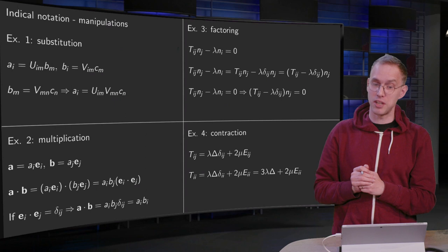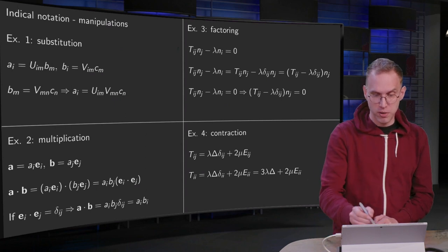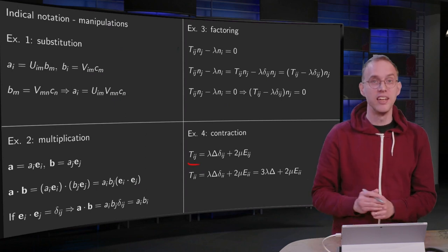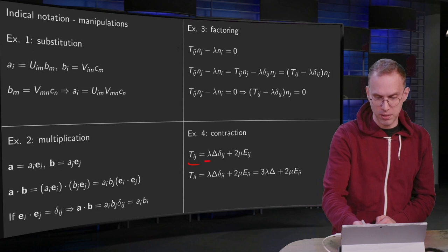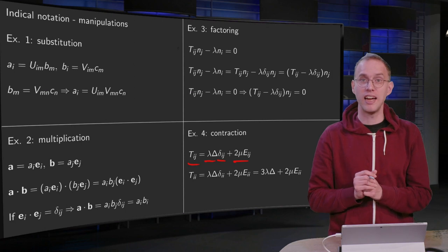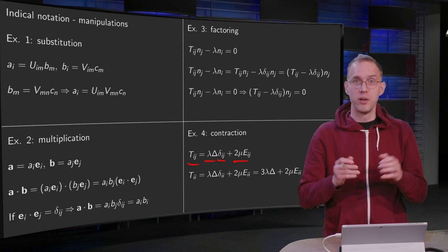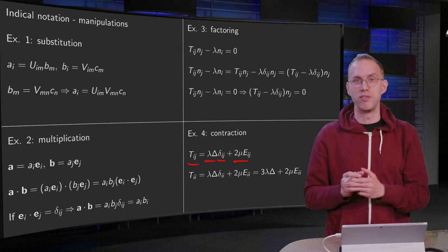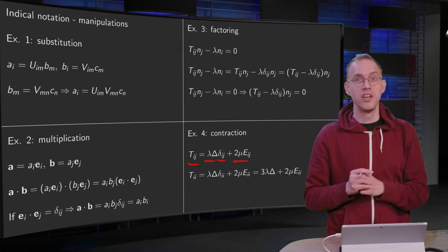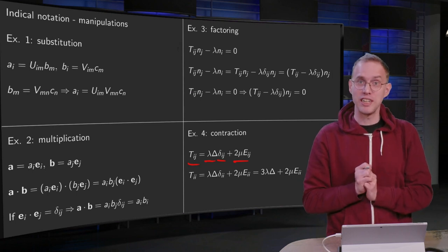And last example: contraction. Suppose we have T_ij is given as lambda delta—some scalar times delta_ij—plus two times mu times E_ij. Looks a bit weird, but later on if you look into elasticity you will encounter this expression again. For now we will just do a small computational example which is called contraction.